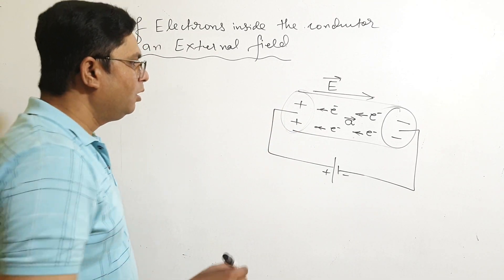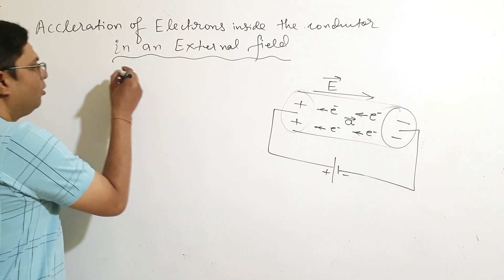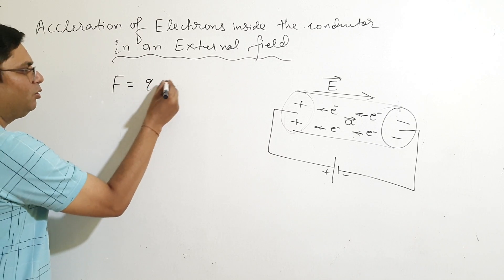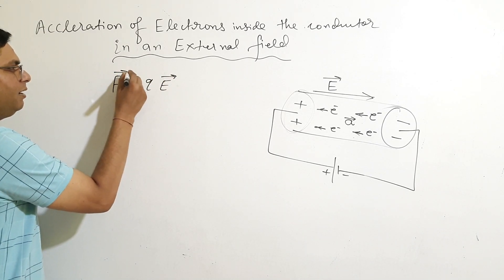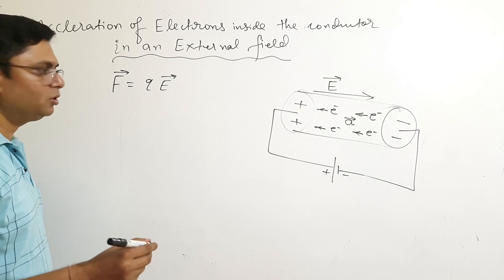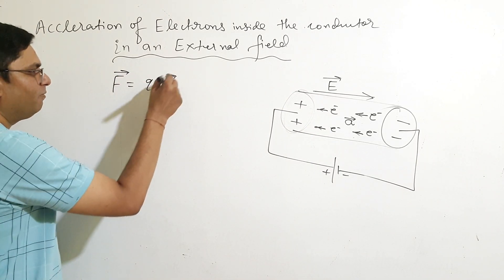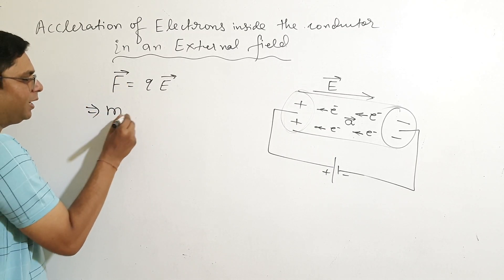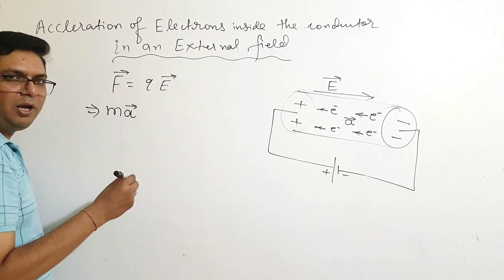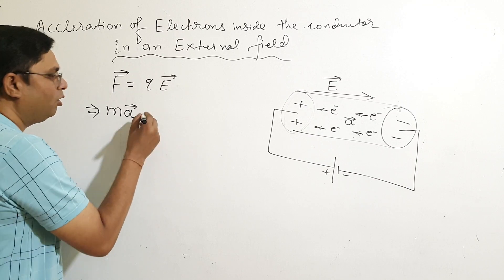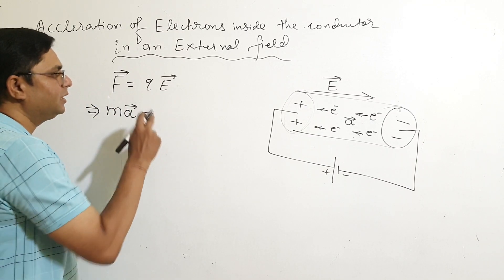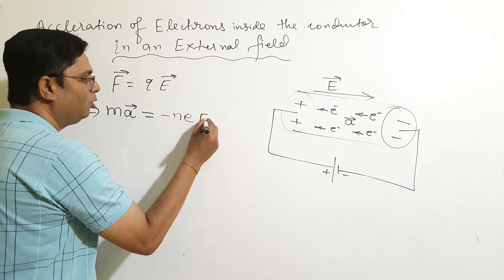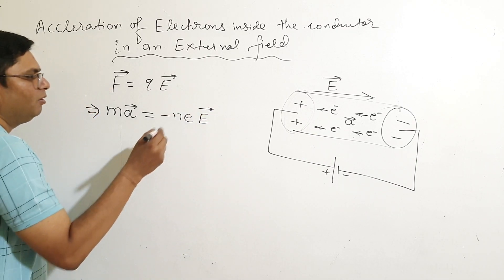We know that force F equals Q into E — electric field into charge equals force. From Newton's second law, F equals MA. For an electron, from the quantization of charge, Q equals minus e, so we have F equals MA from Newton's second law.